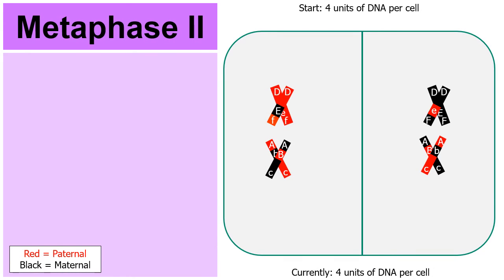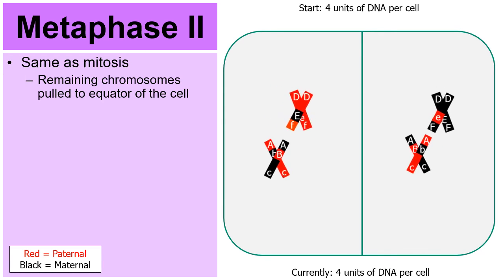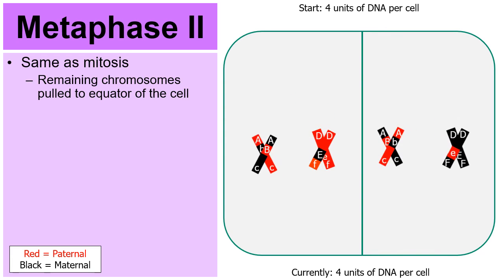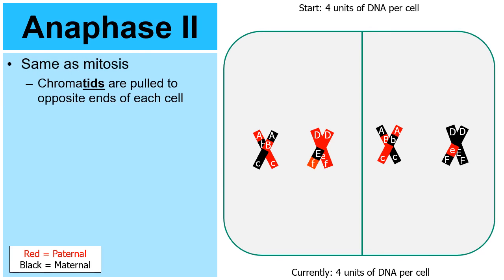In metaphase II, the remaining chromosomes are pulled to the equator line of each cell. Then in anaphase II — really the same as mitosis — the chromatids are pulled to opposite ends of each cell.